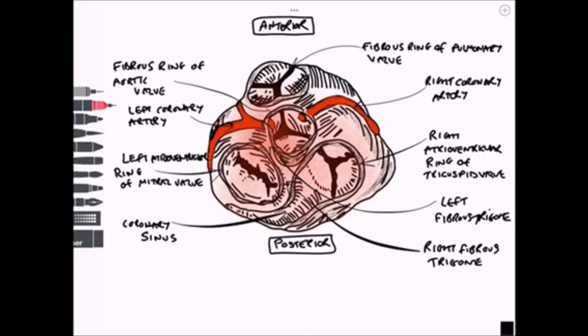So the trigones are what make up really the annulus fibrosis of the cardiac skeleton and we can label here the aortic sinuses coming back to the coronary arteries.